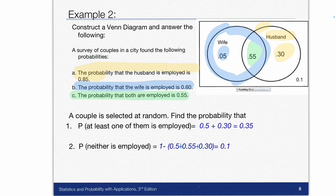Now I can answer some questions about this. So a couple selected at random, find the probability that at least one of them is employed. So what I would do is take my two probabilities, just the wife being employed and the husband being employed. And I get 0.05 plus 0.3 and I get 0.35 when I add them up.